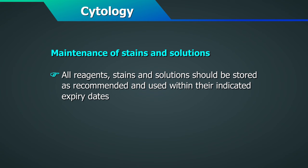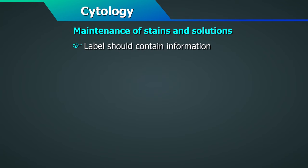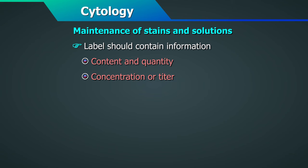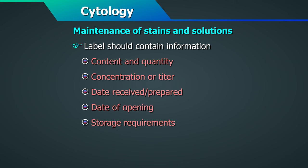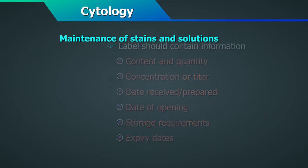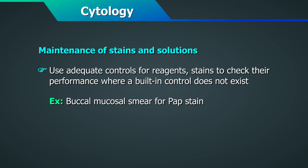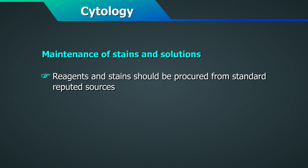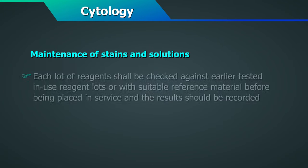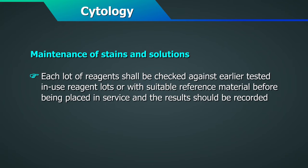Maintenance of stains and solutions: all reagents, stains and solutions should be stored as recommended by the manufacturer and used within their indicated expiry dates. The label should bear the following information: content and quantity, concentration or titer, date received or prepared, date of opening, storage requirements and expiry dates wherever applicable. The laboratory should use adequate controls for reagents and stains to check their performance where a built-in control does not exist, e.g. the buccal mucosal smear for pap stain. Reagents and stains should be procured from standard reputed sources. Each lot of reagents shall be checked against earlier tested in-use reagent lots or with suitable reference material before being placed in service, and results should be recorded.